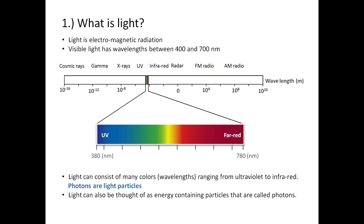Light is electromagnetic radiation. Only a small part of the spectrum is visible, mostly between 380 and 780 nanometers. Light has many colors which are defined by their wavelength. Commonly, we think of light as energy-containing particles — so-called photons. These are the elementary particles or quanta of light.